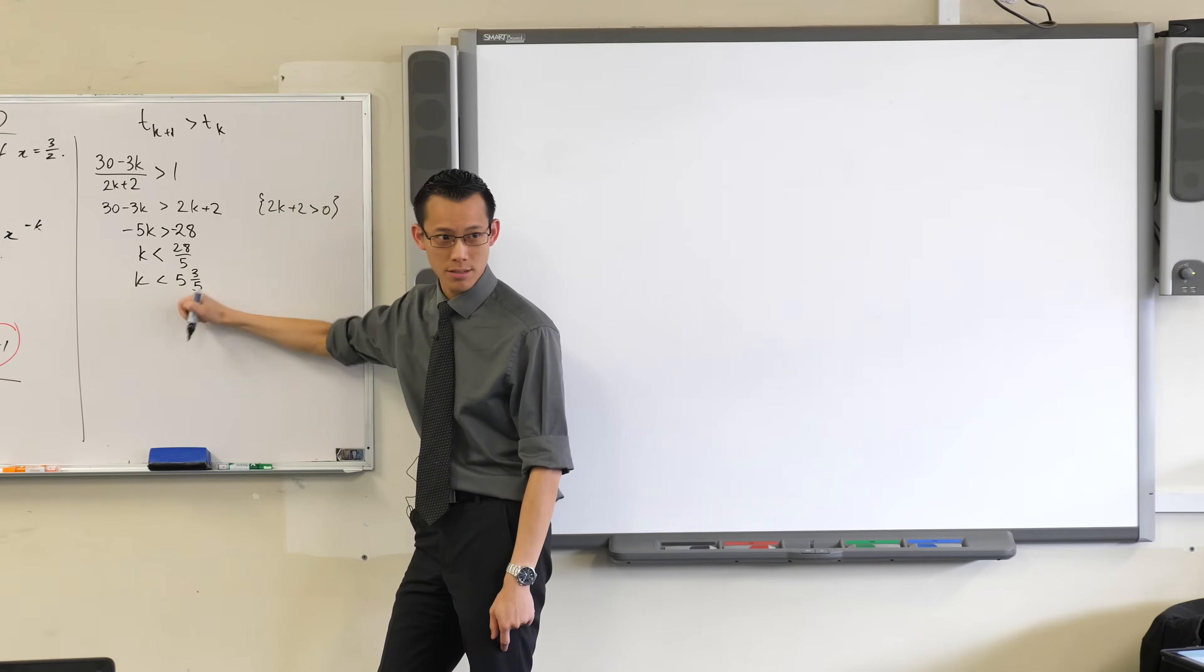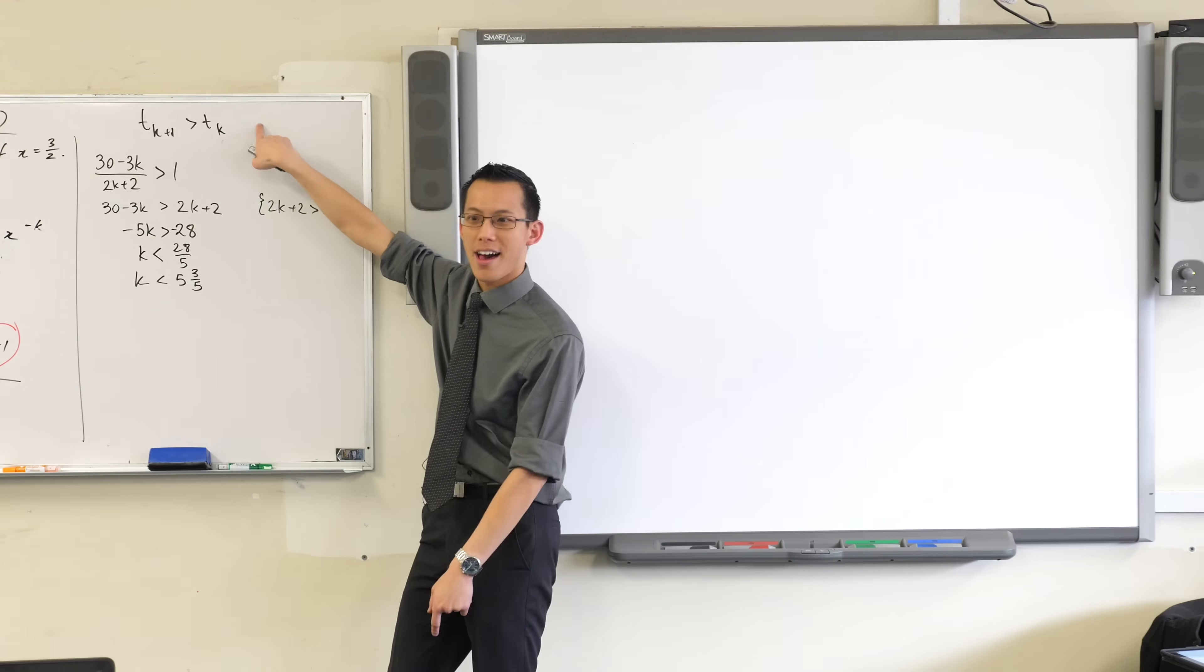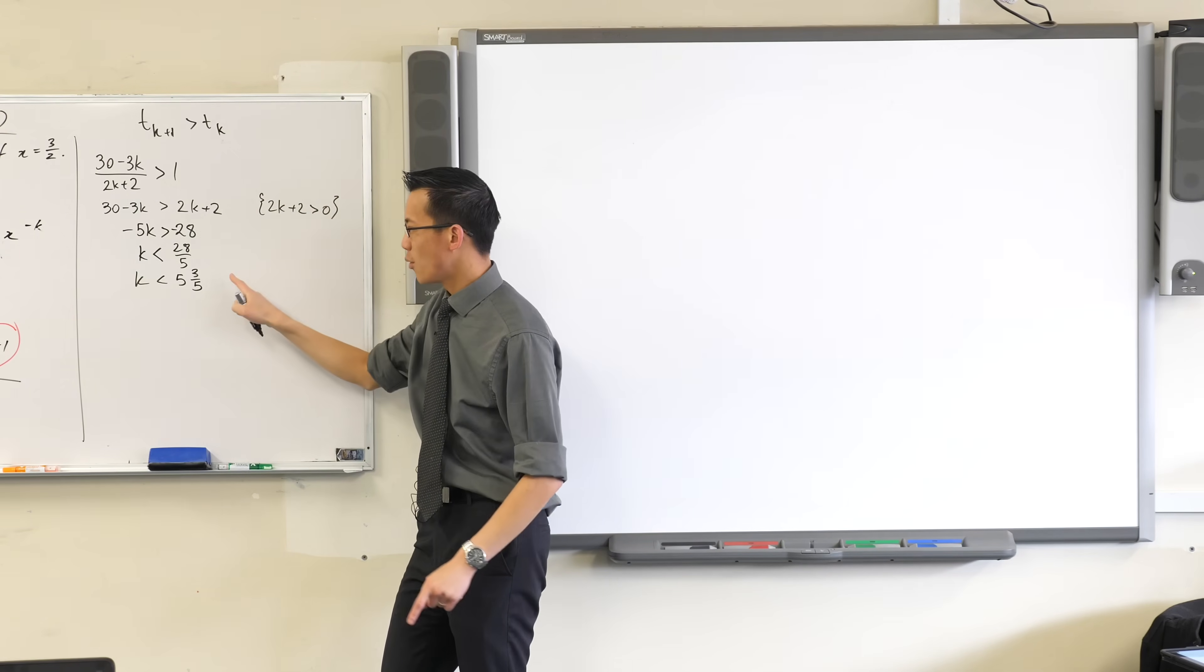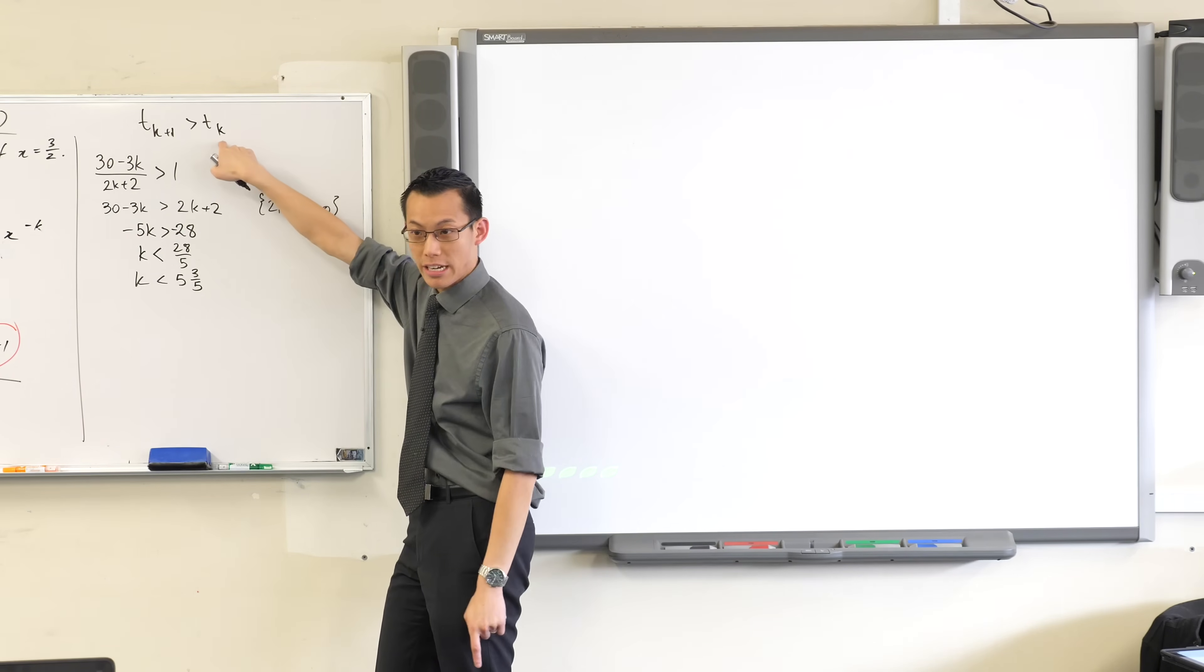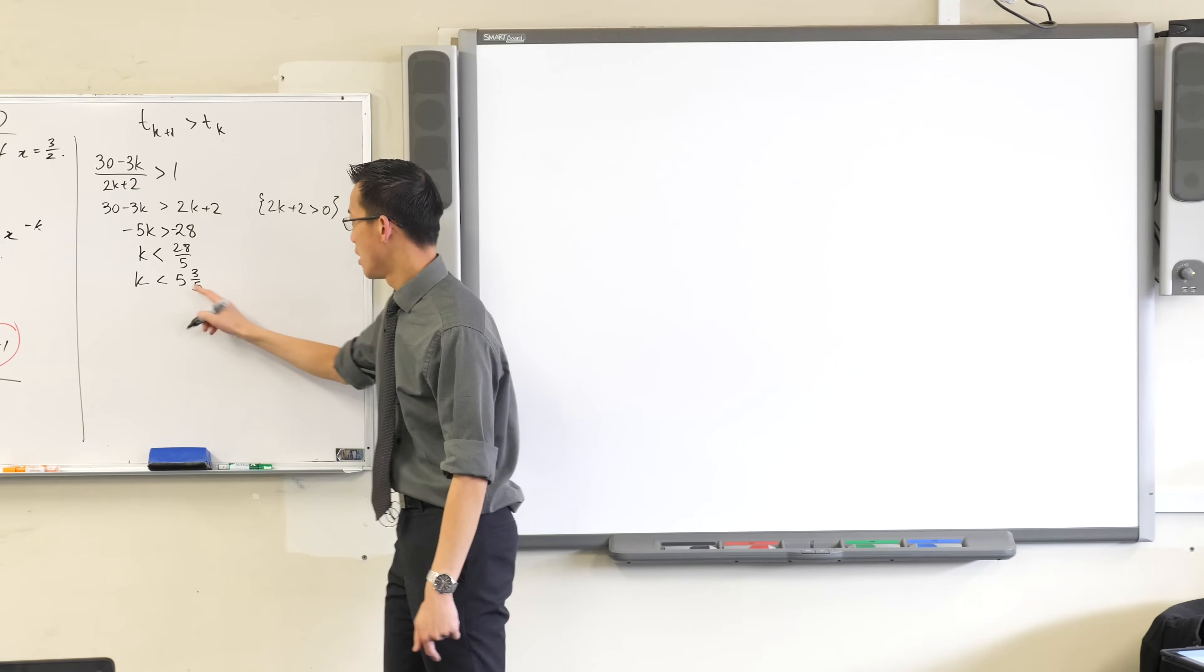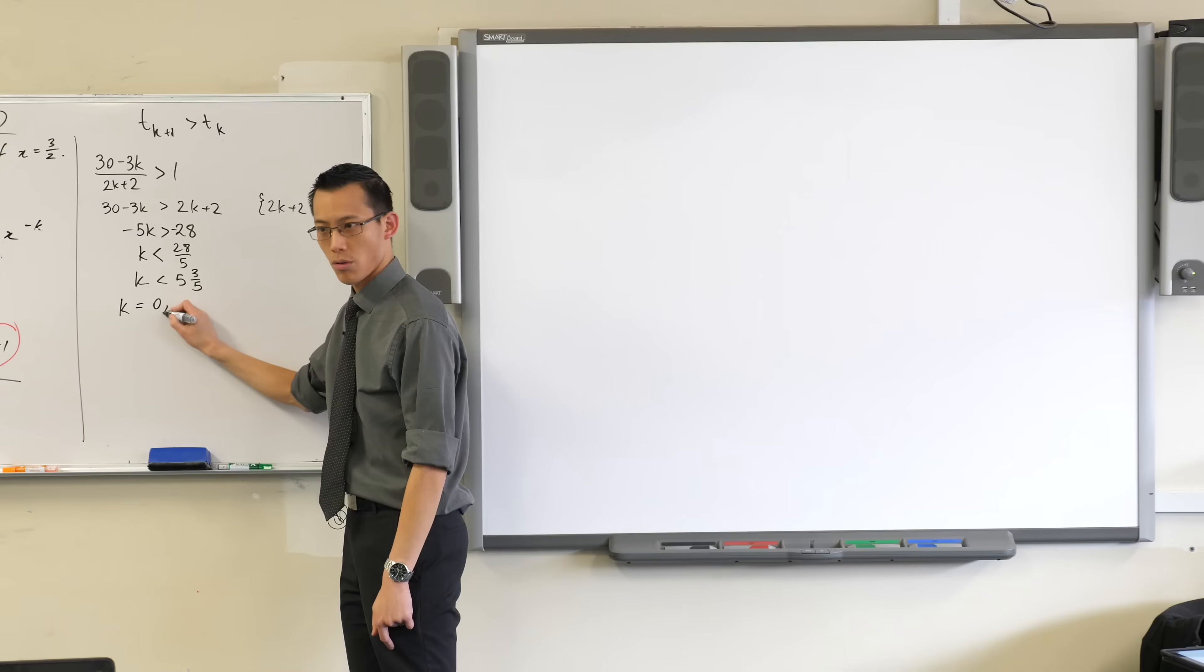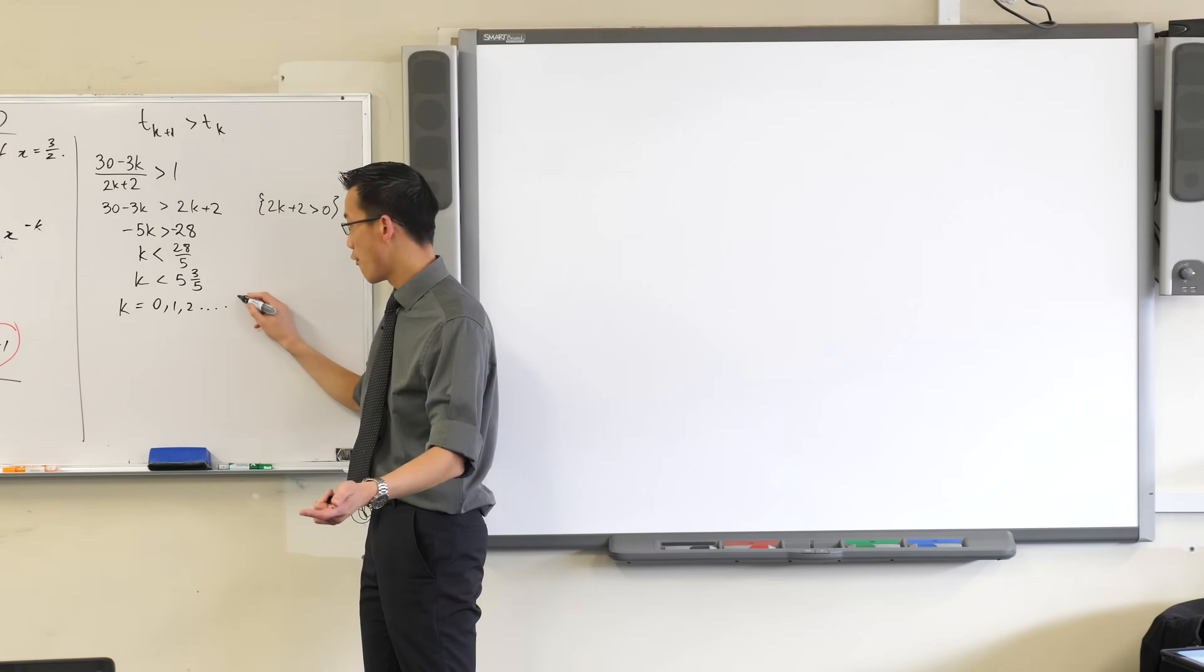So your solution to this, whatever that means, is when that first line is true. Let me say that again. What is when my original inequality is satisfied? So what are the values that work here? Because k can only take on integer values, the values that are less than 5 and 3 fifths will be 0, 1, 2, all the way up until 5.